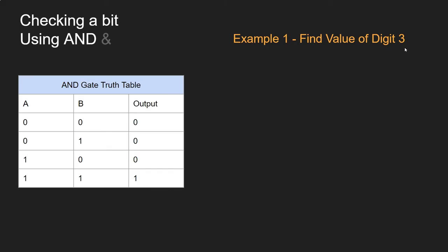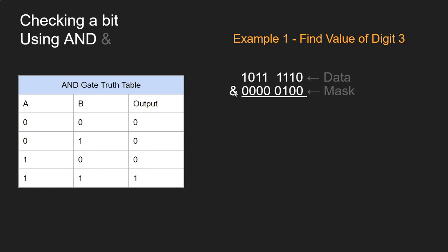For instance, let's say we're trying to find the value of digit 3. Note: when I say digit 3 or digit 4, we start counting from the right-hand side. We put our mask in place with only a 1 at digit 3, because we want to ignore all the others, and then we perform a bitwise AND. The AND operation follows the same rules for each individual digit, so the only digit that turns to a 1 is digit 3 — giving us 00000100.